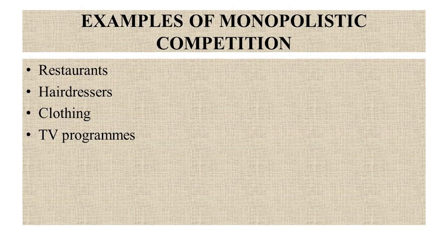We can understand monopolistic competition through some examples. First, restaurants: restaurants compete on quality of food as much as price. Product differentiation is a key element of the business, and there are relatively low barriers to entry in setting up a new restaurant.